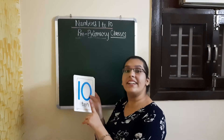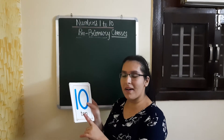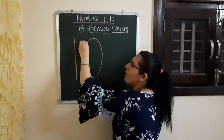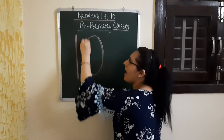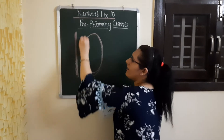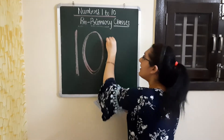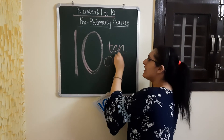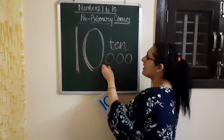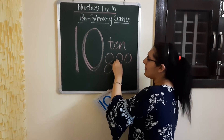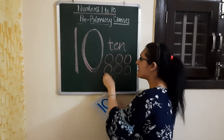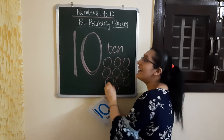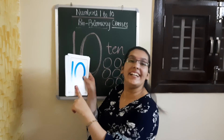Now comes number 10. This is the last number. So let us make it: one stroke down and make a round. One stroke down and make a round. This is number 10. 1, 2, 3, 4, 5, 6, 7, 8, 9 and 10. This is number 10.